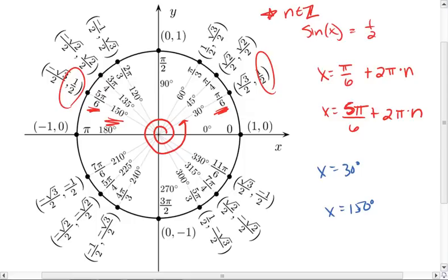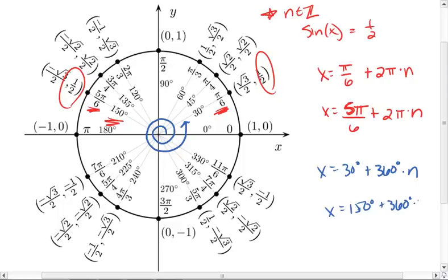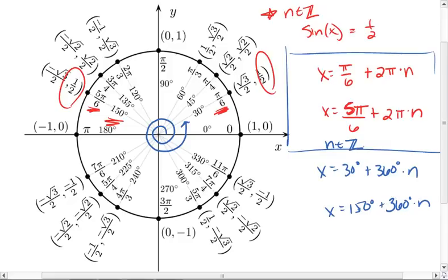And we'll do the same thing for the 5 pi over 6. If you feel more comfortable in degrees, it means we could go full 360 degrees as many times as we want, as long as we stop at our angle, so we're going to add 360 times n. This is your full, complete answer for a problem like that, as long as you make sure to define n as an element of ℤ.